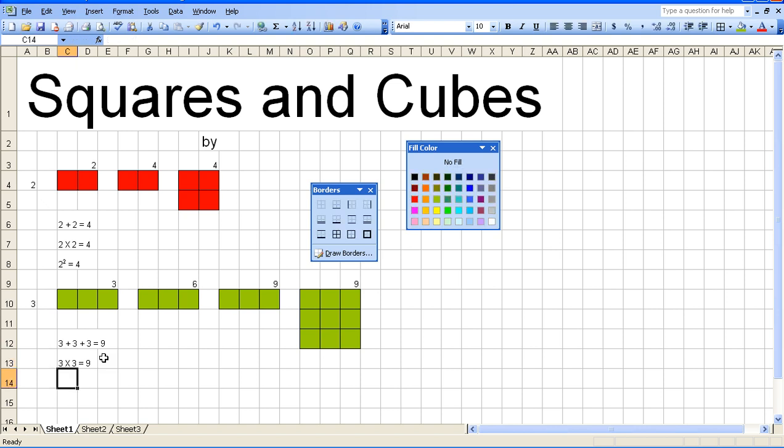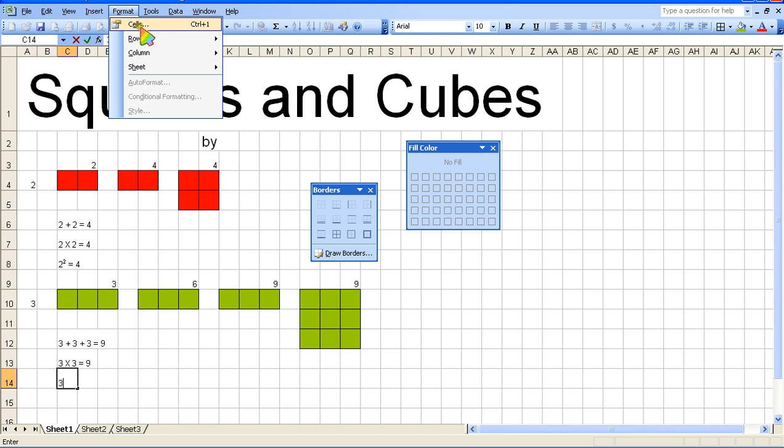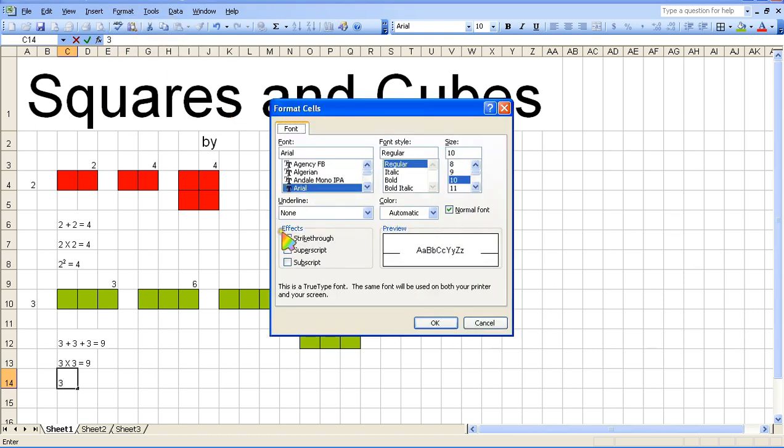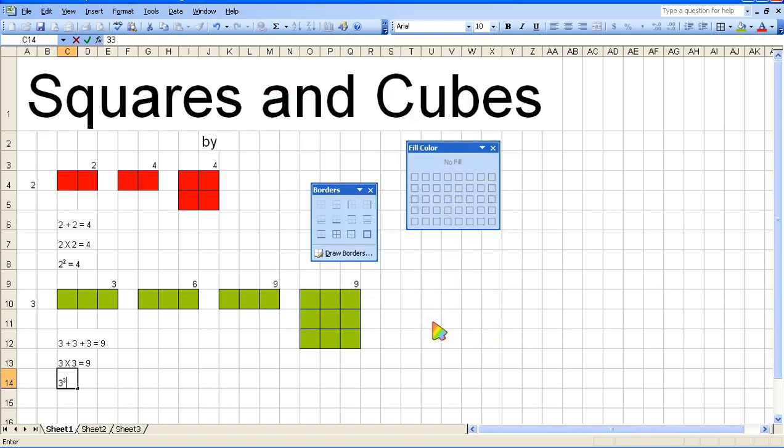Now do you remember how to use the superscript? You type in your 3, you go up to format, down to cells, click on superscript, Superman, and OK. Type a 3, not a 3, a 2, because this makes a square.